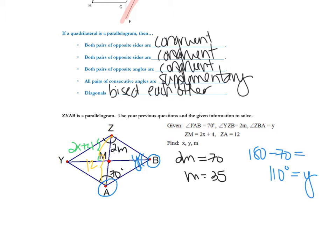And then the last part — the green and the yellow. We know that diagonals bisect each other. So if the full length is 12, then half of it is 6. We can set up the equation: 2X plus 4 equals 6, so 2X equals 2, and X equals 1. That was kind of just a review of what we've been doing so far.